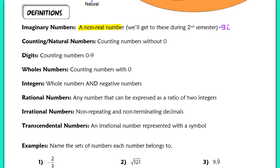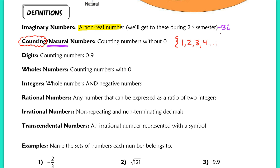A counting number is also referred to as a natural number. Way back at the advent of numbers, when they started counting, they started with the number 1. Think about little kids — when they start counting, they don't say 0 first; they say 1, 2, 3. So the set of natural numbers is the set of all numbers starting from 1 and above, going on infinitely.